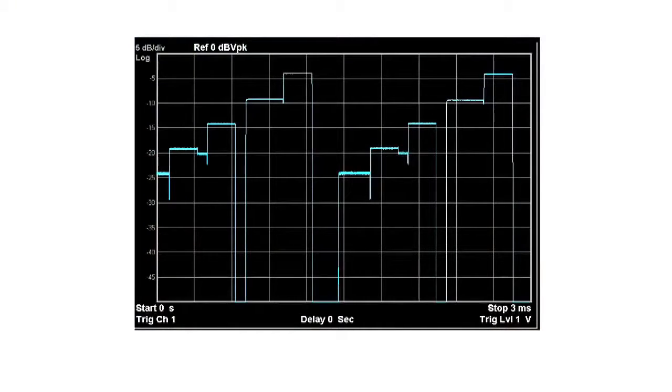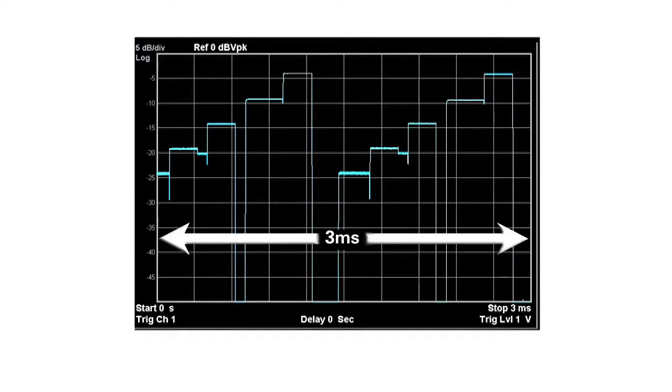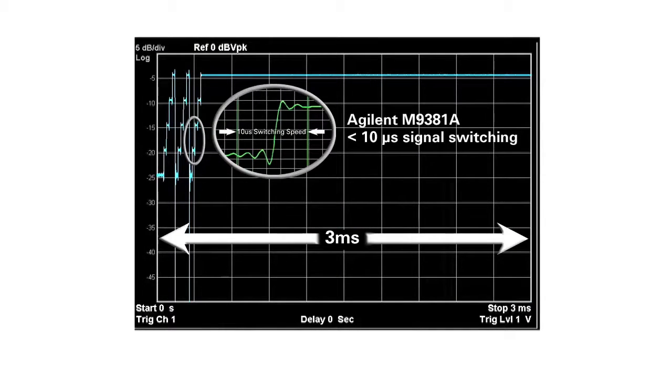Before the M9381A, amplitude and frequency switching speeds were in the hundreds of microseconds. With the M9381A, we've taken that way down to less than 10 microseconds.